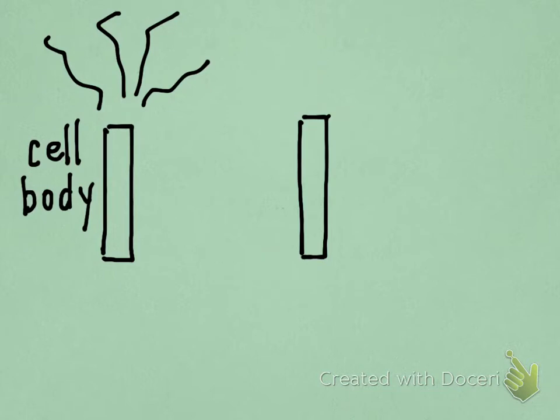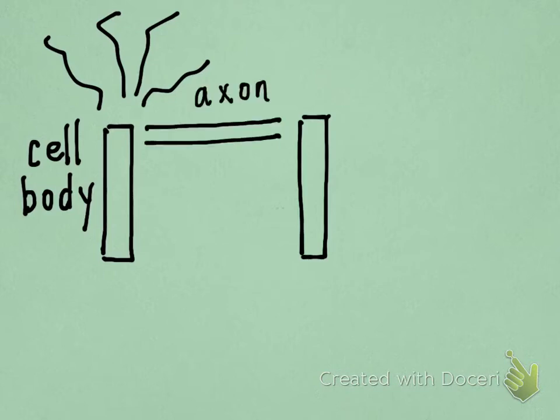Now a telephone pole does not exist all by itself. What does it connect to? It has to connect to another telephone pole. The cell body of the first neuron connects to the cell body of the second neuron by the axon. The axon is a slender tail-like extension that transmits electrical signals to other neurons or dendrites.